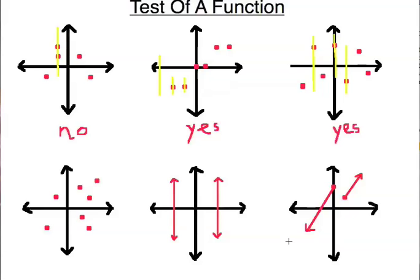Next one — notice right here it will fail the vertical line test. So I have to say no, it's not a function. And on this one, it fails the vertical line test miserably right here, passing through a great number of points, and it also fails over here. So very simply, it's not a function.